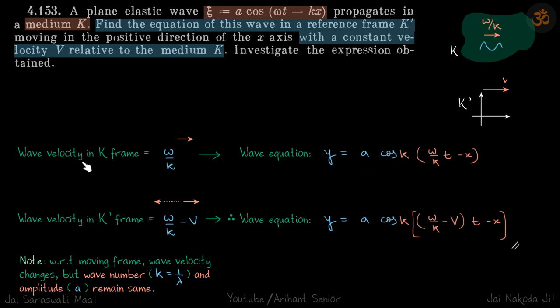So let's first write what's given. Wave velocity in medium K, which I can also write as K frame. Let's say this is a frame, reference frame that is at rest, and K' is moving with velocity v with respect to that frame K.